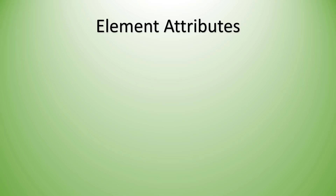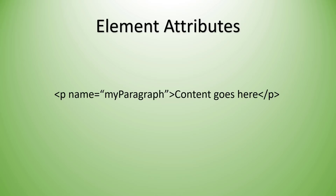These are special attributes that can be added on an element to help provide the element some additional information it might need. For example, here is a paragraph element and we've specified the name attribute. We're assigning to the name attribute a value, and the value we're assigning is 'my paragraph'. Notice that an attribute is receiving the value and the value is inside of quotation marks — you always want to wrap the value inside of quotation marks. Between the attribute name and the value is an equal sign.